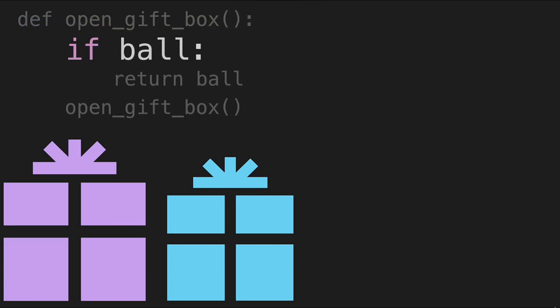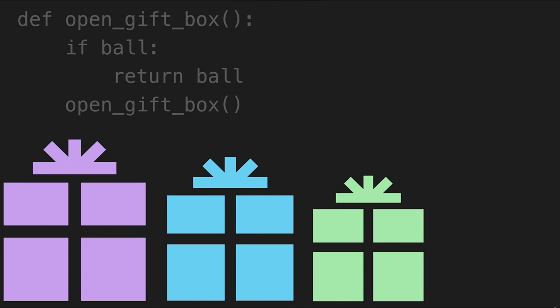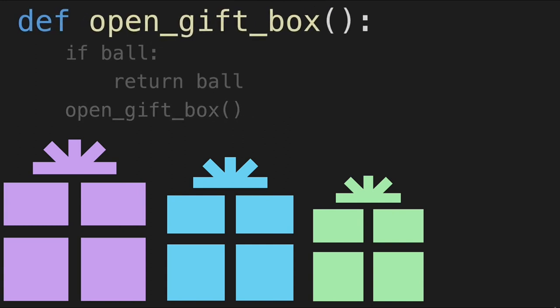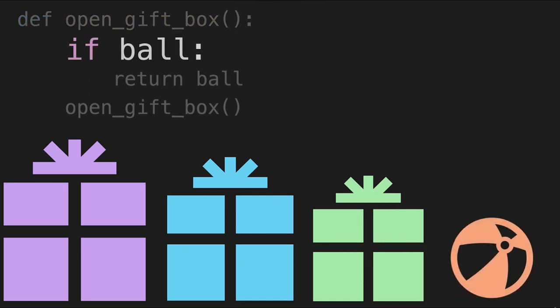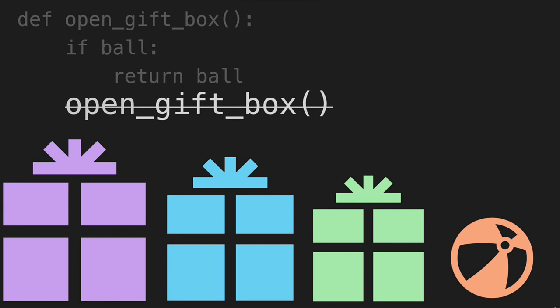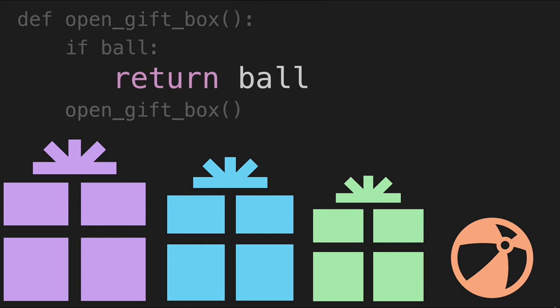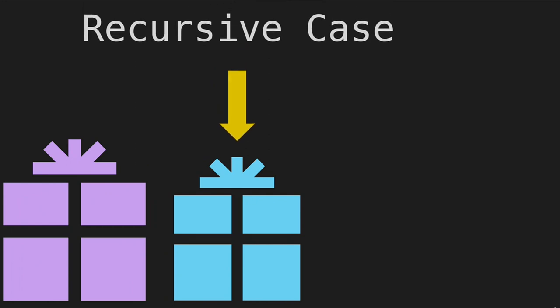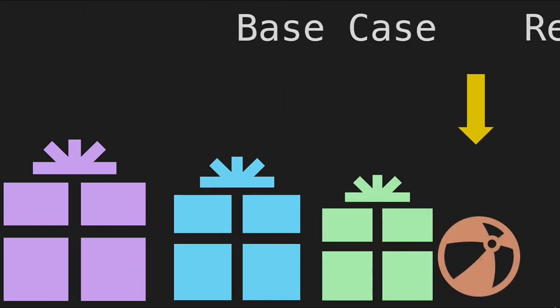We check to see if the box contains a ball. It does not, so we run another instance of open gift box. It calls itself again. Now when we check, it is a ball. Because we have a return, we will not continue calling the function — we stop. When we open a box and it contains the ball, this is what we call our base case — when we stop opening boxes. If it needs to call itself again, this is called a recursive case.